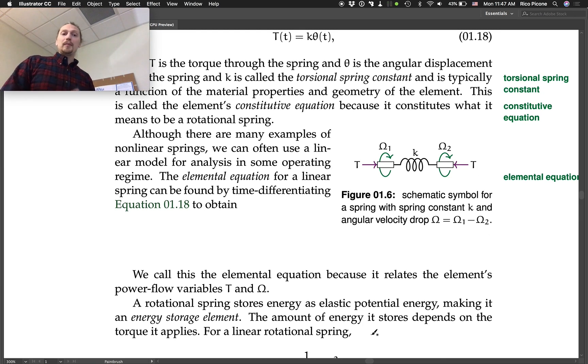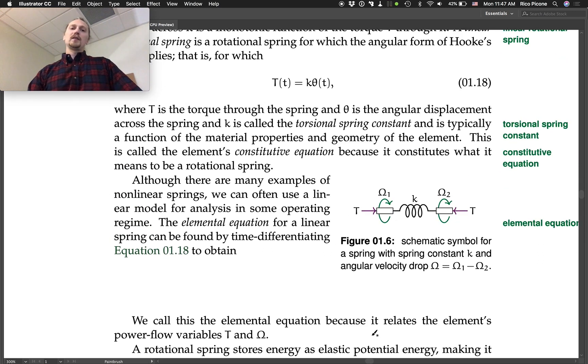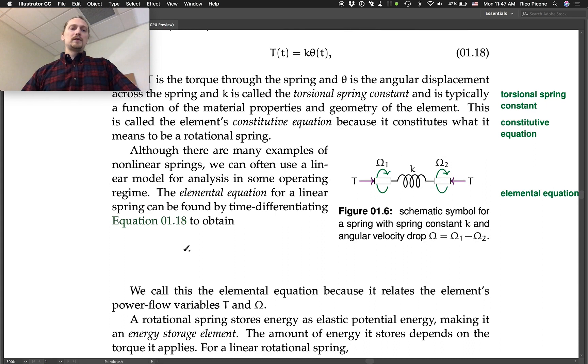Although there are many examples of nonlinear springs, we can often use a linear model for analysis in some operating regime, just like for translational springs. The elemental equation for a linear spring can be found by time differentiating this equation above to obtain dT/dt equals k times d theta dt, which is just omega, right? The angular velocity. We call this the elemental equation because it relates the elements power flow variables, T and omega. And we can look at the schematic symbol here, which once again, looks like a spring.